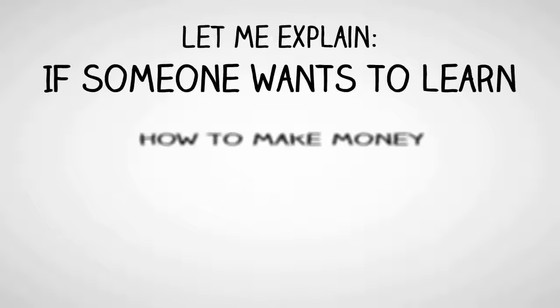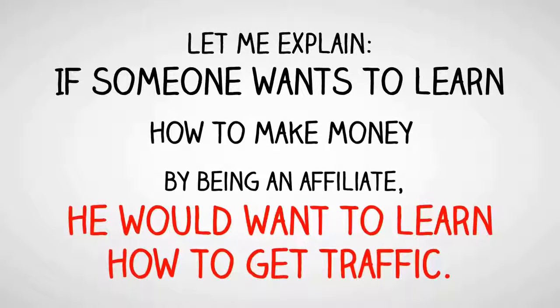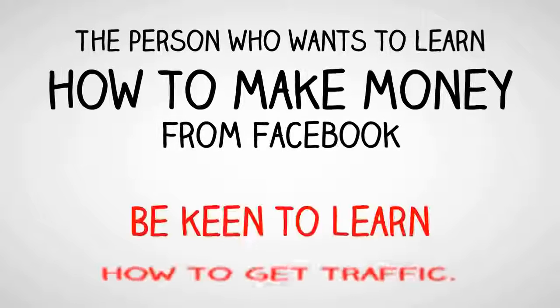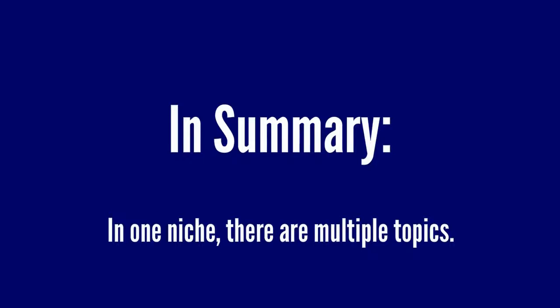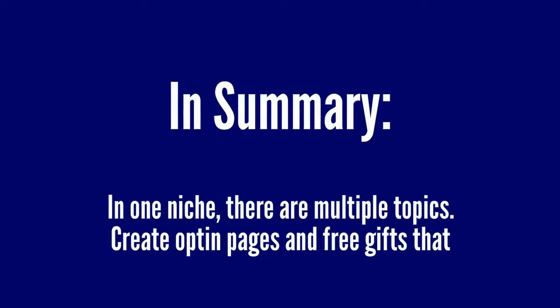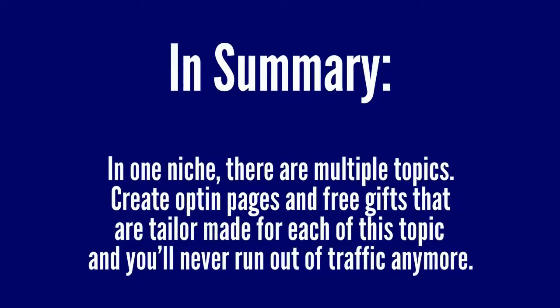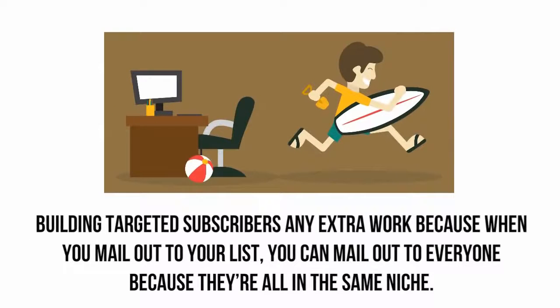Let me explain. If someone wants to learn how to make money by being an affiliate, they would want to learn how to get traffic. And not surprisingly, the person who wants to learn how to make money from Facebook would also be keen to learn how to get traffic. In summary, in one niche there are multiple topics — great opt-in pages and free gifts tailored for each of these topics — and you will never run out of traffic anymore. You won't need to do any extra work, because when you mail out to your list, you can mail everyone since they are all in the same niche.